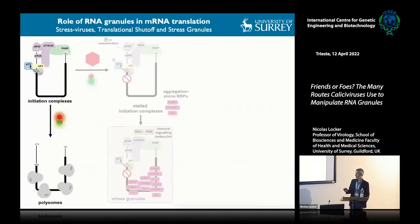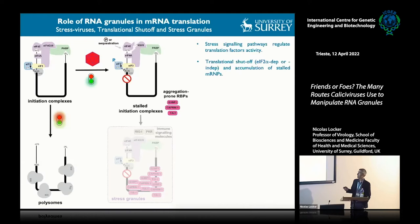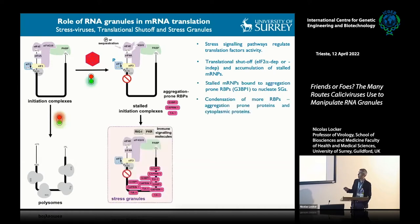Stress granules form as a consequence of translational inhibition, which normally occurs via the phosphorylation or cleavage of specific translation factors. The initiation complexes that are stalled are then recognized by aggregation-prone proteins, and G3BP1 is one of the key proteins driving this. These complexes condense into stress granules that impact many processes, and because they condense immune signaling molecules, stress granules have been proposed to have antiviral effects.